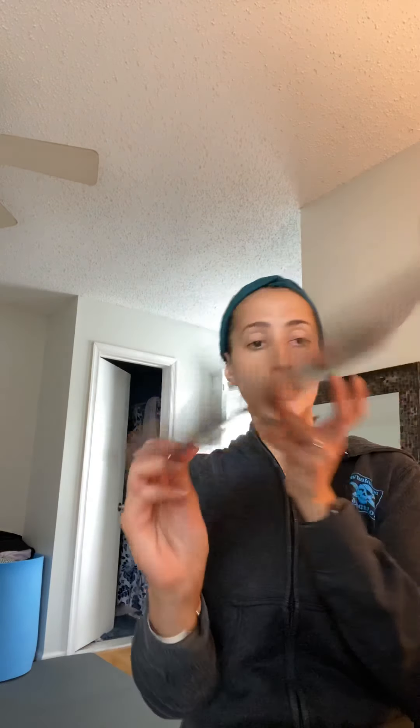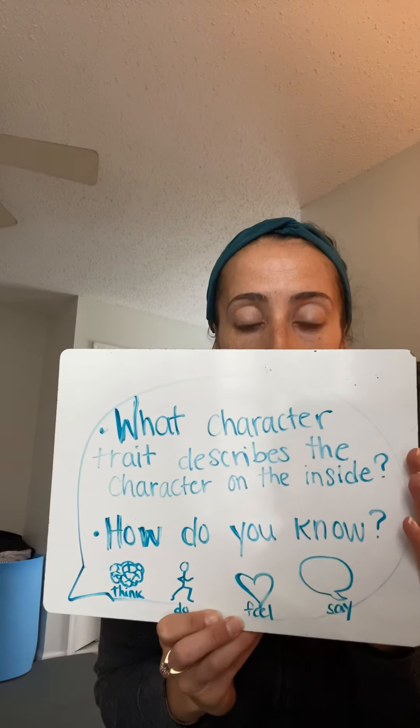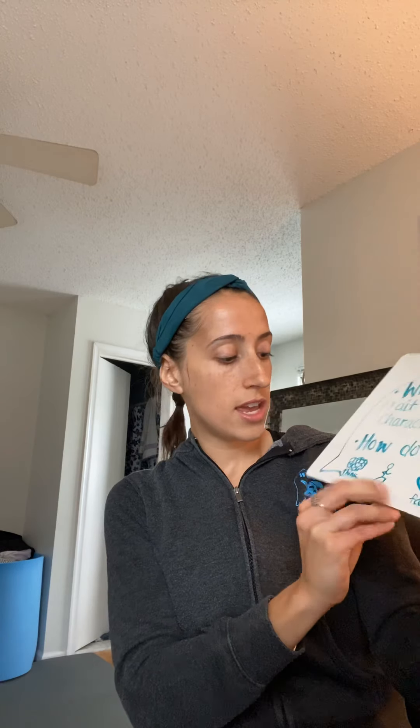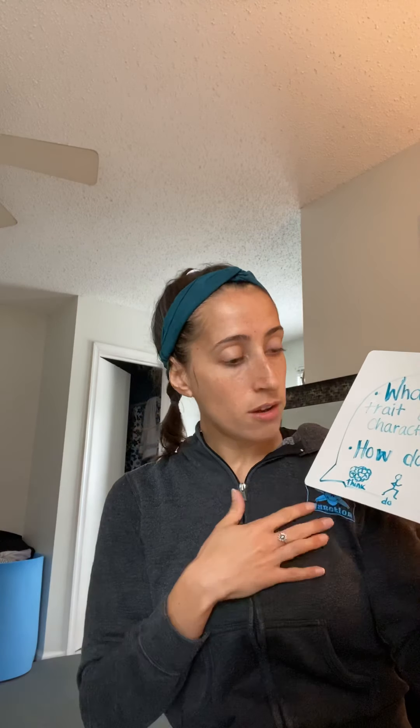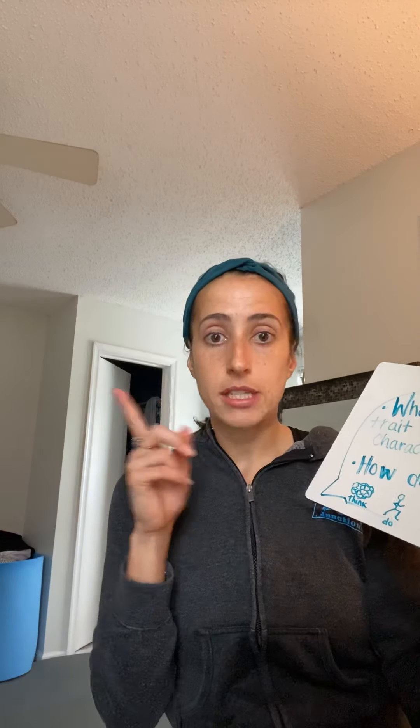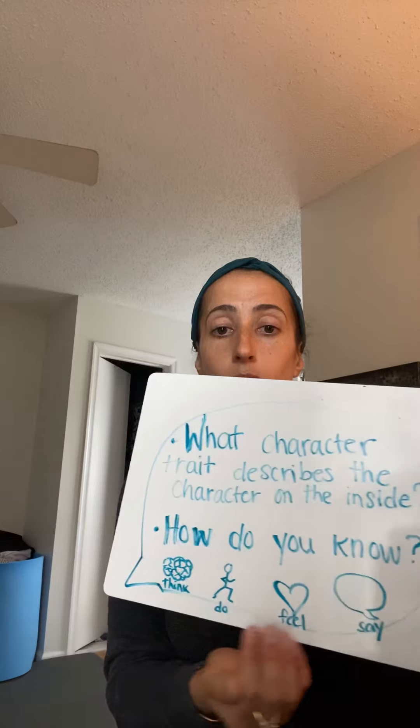And remember, we have used this text or talk card. It says: what character trait describes the character on the inside? How do you know? Think — it has a brain. Do — it has a person running. Feel — with a heart. Or say — with a speech bubble. So those are the four things we are looking for in the story to help us describe our character and their traits.